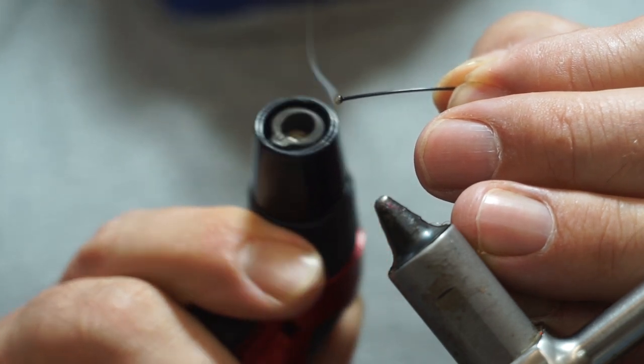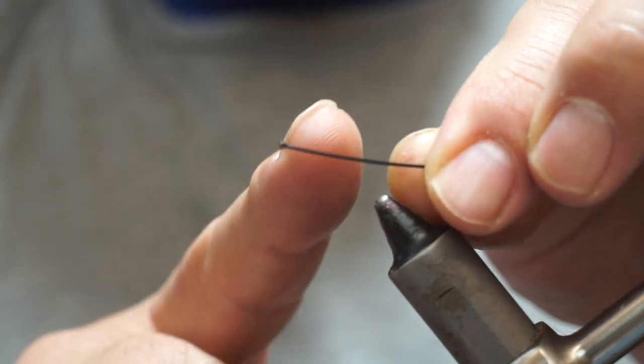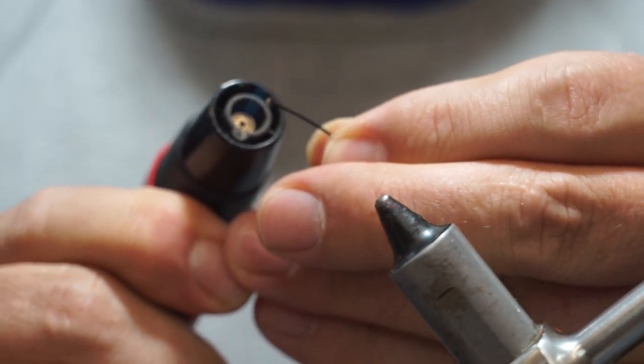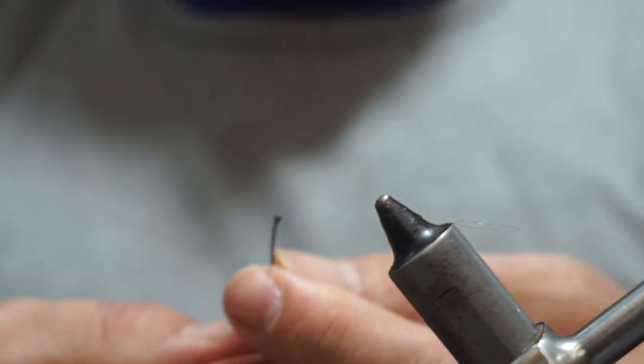So I flame the end, that creates a little ball and then I'm taking these which are like 1.8 ml seed beads, these happen to be an orange glass bead and I'm going to put two of those on and then I will flame the other end, that stops them sliding off.